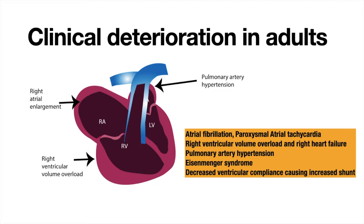These complications include atrial fibrillation, paroxysmal atrial tachycardia, right ventricular volume overload and right heart failure, pulmonary artery hypertension, and Eisenmenger's syndrome, which is cyanosis due to a reversal of the shunt, and decreased ventricular compliance, causing an increase in shunt.